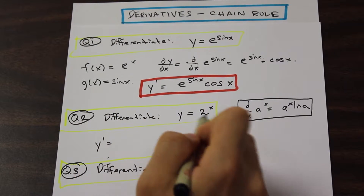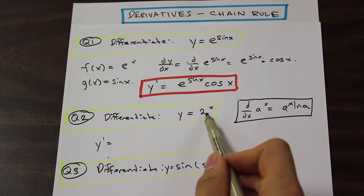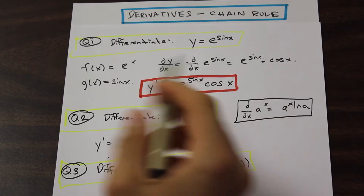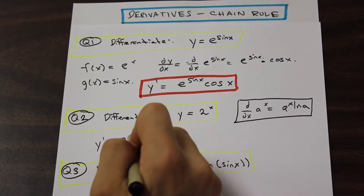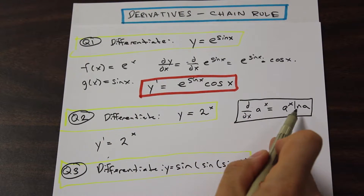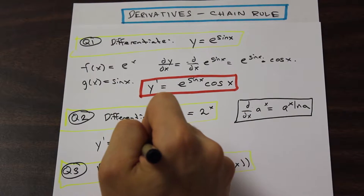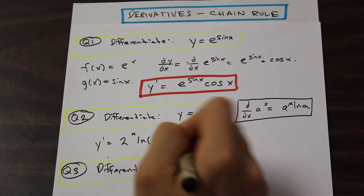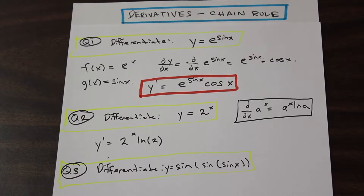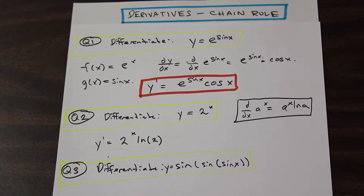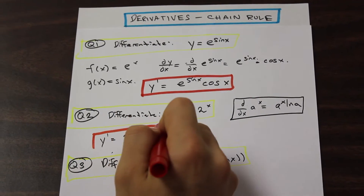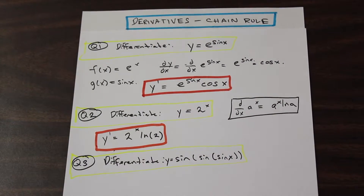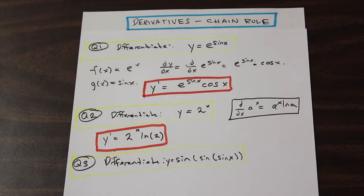So all you're going to do is take that a to the x and leave it the way it is, and multiply by the natural logarithm of the constant. So y prime equals 2 to the power of x times ln 2. That's really all it is. It's simple, but it is a prime trick for your professor to put on the midterm, so make sure you know that rule. Just memorize it so you can get that right.